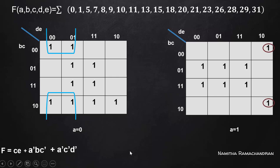The next combination involves two cells with no other match available, so this is the maximum possible match. For these two cells, A equals 1 is common, C equals 0 is common, and D equals 1 with E equals 0 is common since these cells lie in the same column. So the minimized form is A, C-complement, D, E-complement.